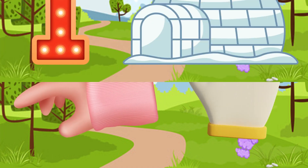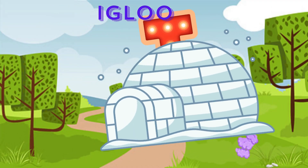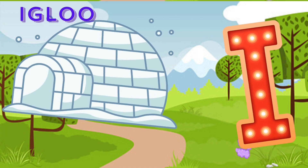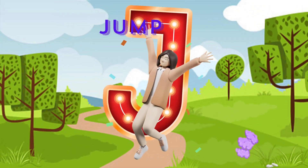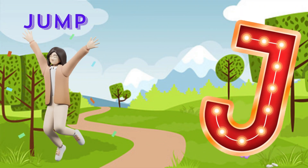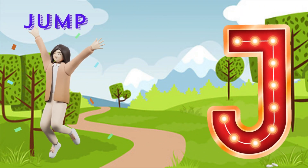I is for igloo, i-i-igloo. J is for jump, j-j-jump.